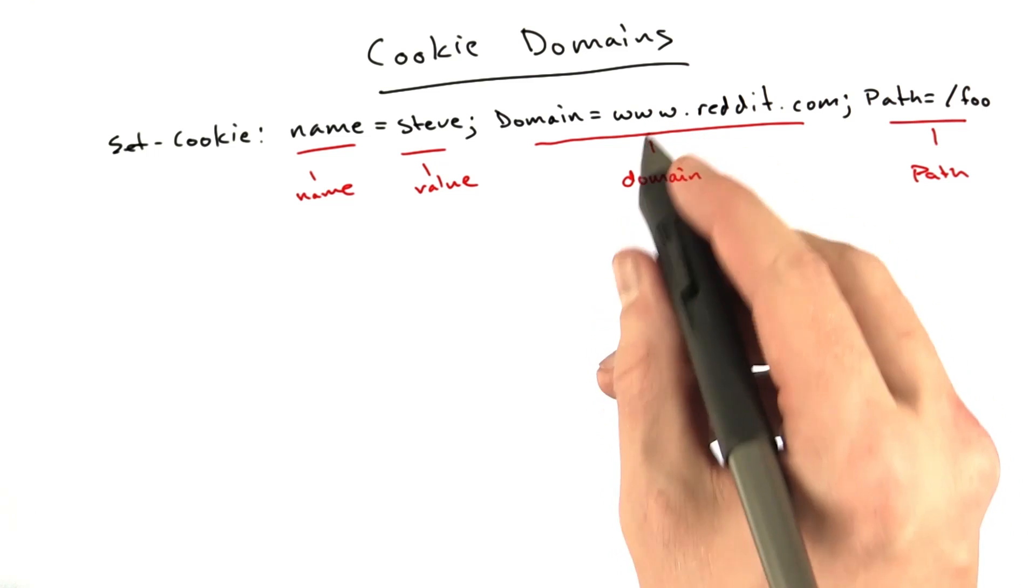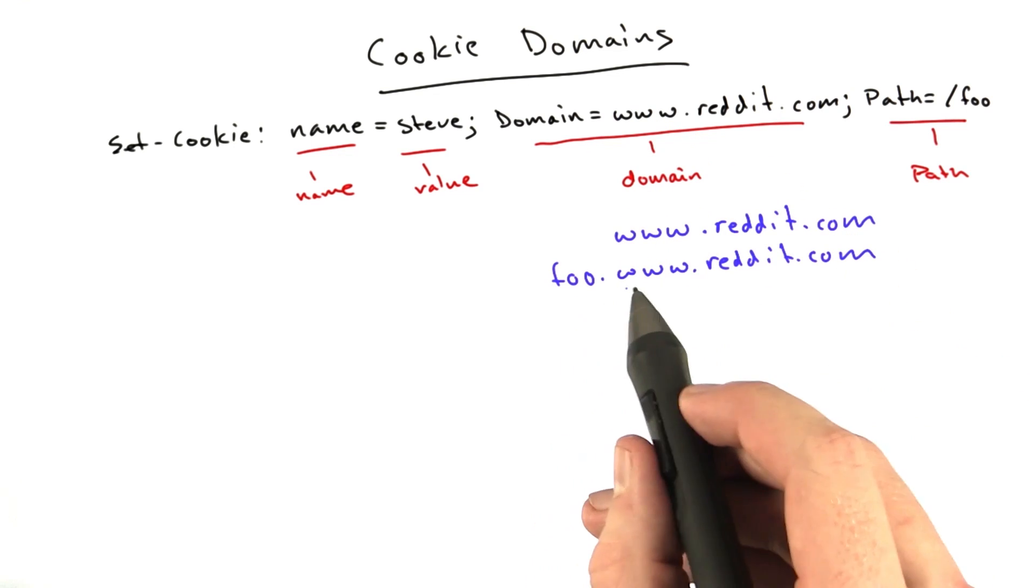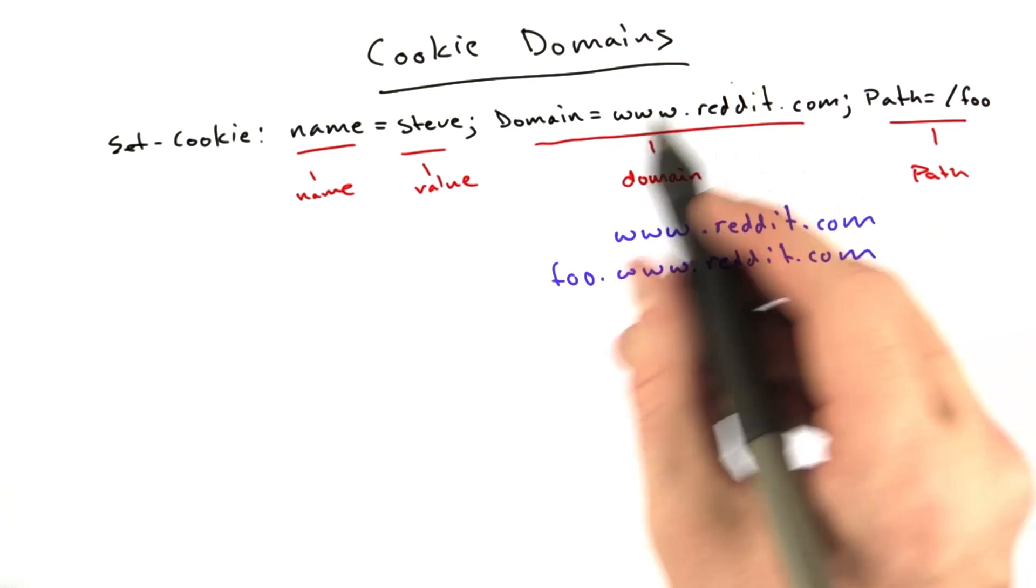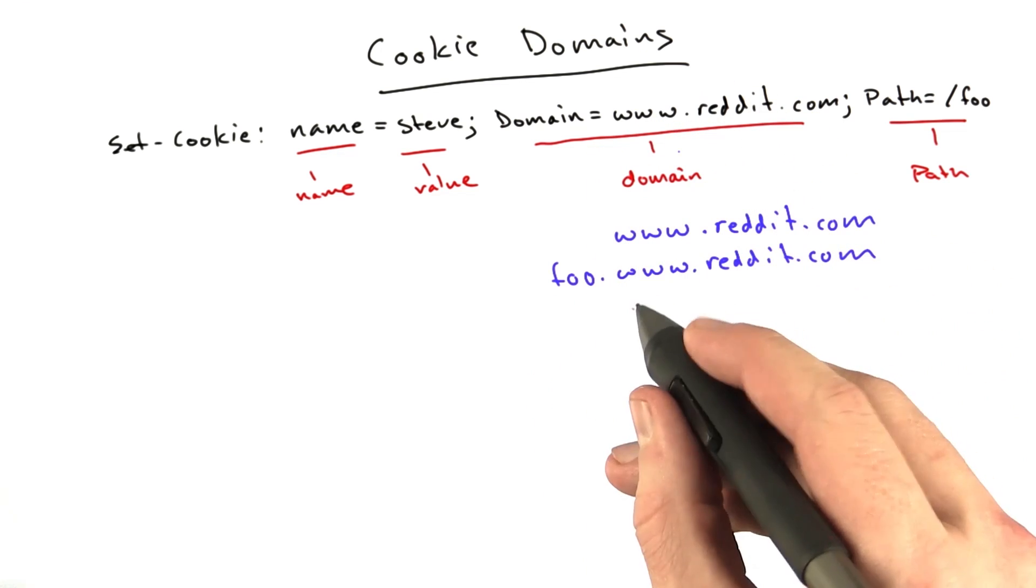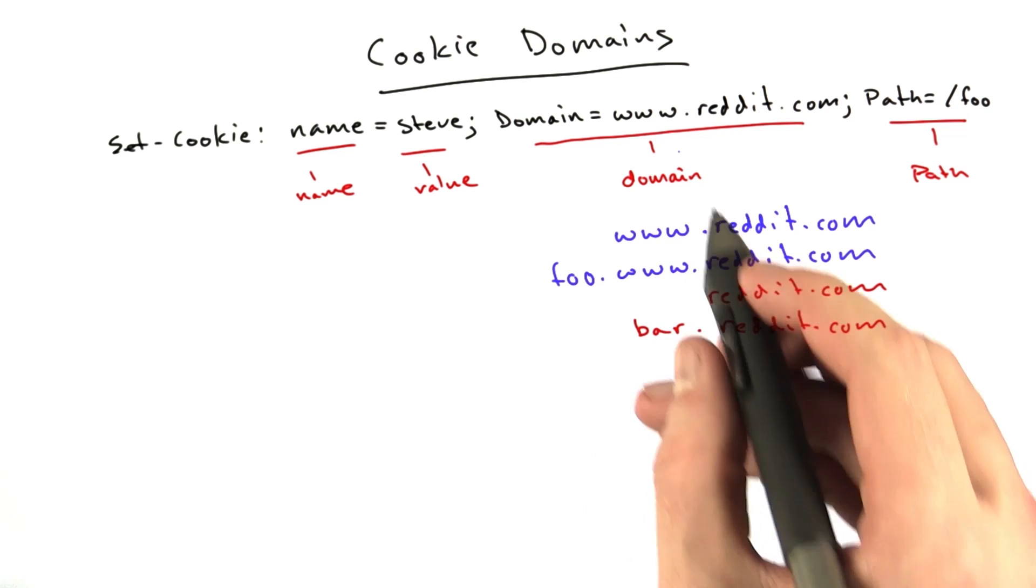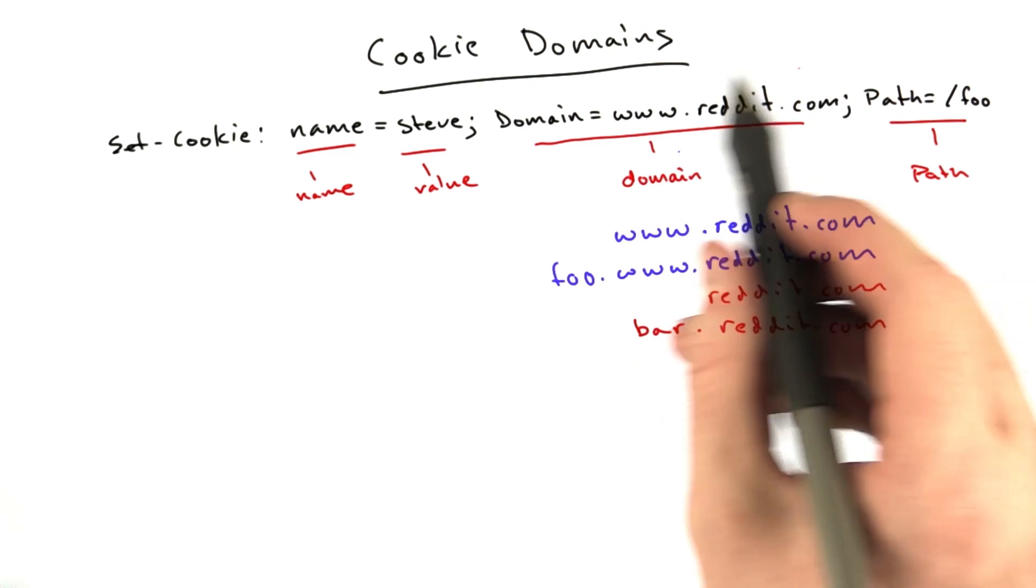Domains that this works for are, for example, www.reddit.com or foo.www.reddit.com. Domains that will not receive this cookie would be, for example, just reddit.com without the www, or bar.reddit.com because this cookie was restricted to www.